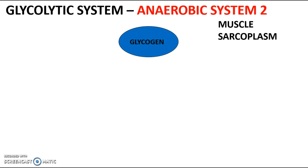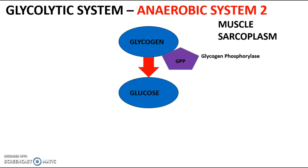As with all fuels, an enzyme must act on them to break them down. In the glycolytic system, glycogen — our fuel stored in muscle — is broken down by the enzyme GPP, which stands for glycogen phosphorylase. As always with enzymes, it's useful to note where the initials come from. Like creatine kinase before it, this enzyme ends in '-ase' and the fuel name appears at the start.